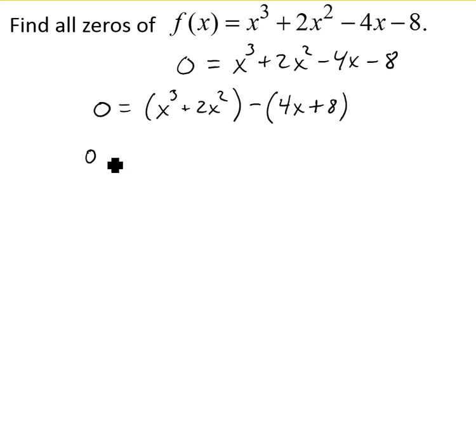Let's see what each set of parentheses has in common. The first set has an x squared in common, leaving us with x plus 2 when we factor it out. The second set has a 4 in common, which also leaves us with x plus 2.